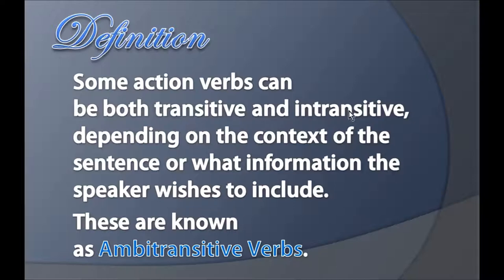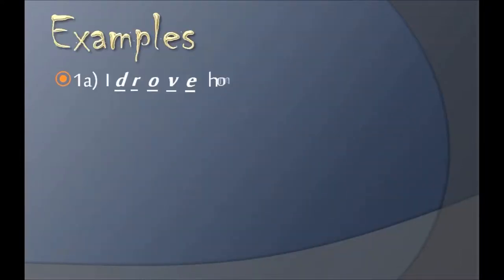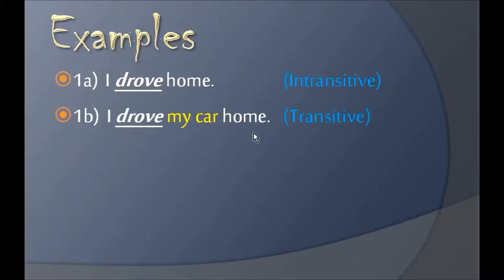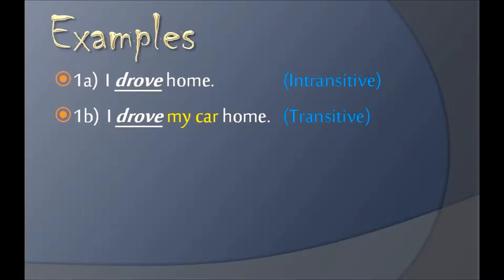Let's see some examples. The first one is 'I drove home.' Here, 'drove' is the verb, and 'home' is not the object, so this is intransitive. Then comes 'I drove my car home' — now 'my car' is the object, and the verb is used transitively. So 'drive,' written in past tense as 'drove,' can be used both transitively and intransitively.